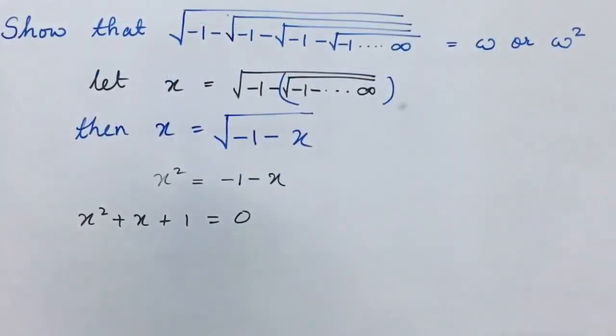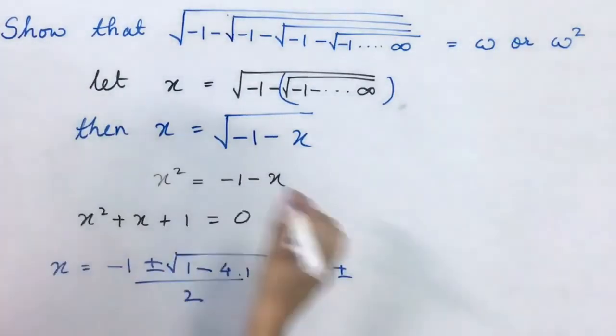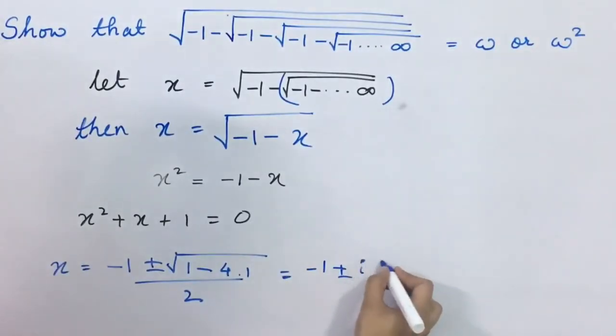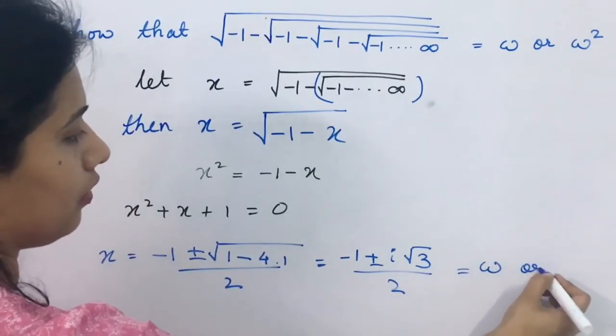Now using the quadratic formula, we can find the roots of this equation. So here, this will be minus b plus minus under root of b square minus 4ac upon 2a. This is equal to minus 1 plus minus under root of minus 3. Ye ho jayega i root 3 upon 2. So humein do roots mil gaye hain, aur ye jo value hain, this is the value for omega or omega square.